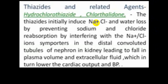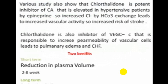Hydrochlorothiazide and chlorthalidone act via the sodium-chloride symporter present in the distal convoluted tubule, resulting in loss of sodium, chloride, water, potassium, and magnesium. This causes a decrease in plasma volume, decrease in extracellular fluid, fall in cardiac output, and fall in blood pressure — producing beneficial effects in hypertension.